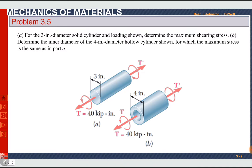Problem 3.5 from the exercise: In Part A, for the three-inch diameter solid cylinder and loading shown, determine the maximum shearing stress. The diameter is three inches and torque is 40 kilopound-inches. You can find maximum shearing stress from τ = TC/J, where T is torque, C is the outer radius, and J is the polar moment of inertia.